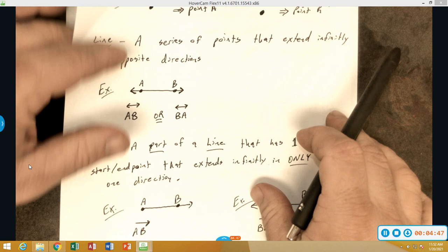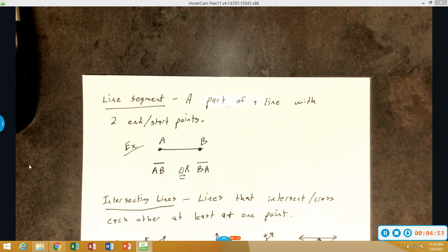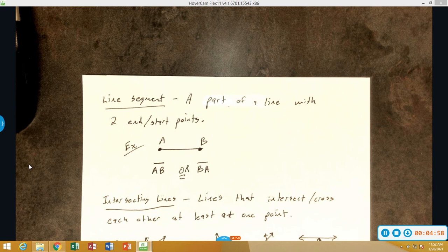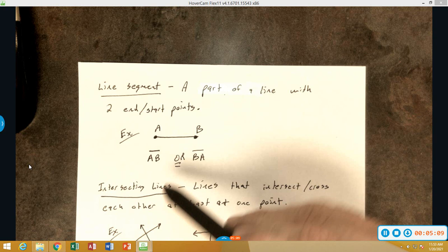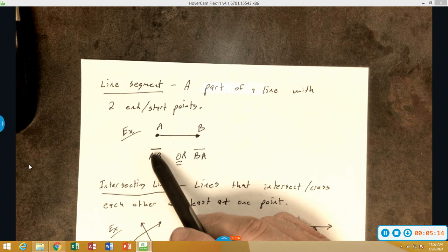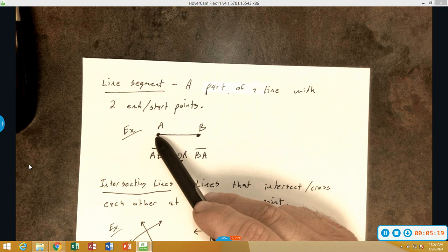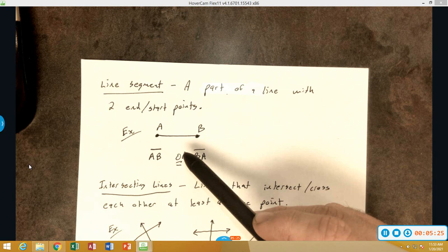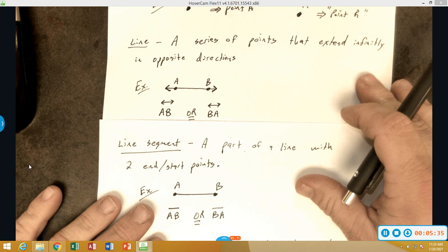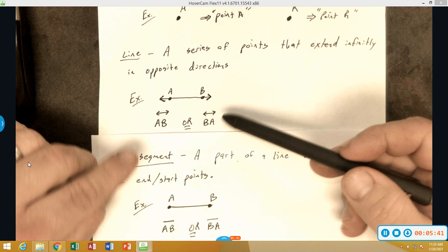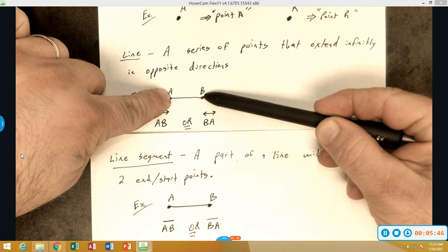Next, we have a line segment. A line segment, once again, is just a part of a line in which we have an endpoint and a starting point. Notice that the arrows are not protruding out of either one. We're starting at one letter and stopping at the other. The symbol for line segment is just a line with no arrows. We can call it line segment AB or line segment BA. We can compare this once again back here with the line to see that it is definitely part of that line. This line segment is this line if we get rid of the arrows.